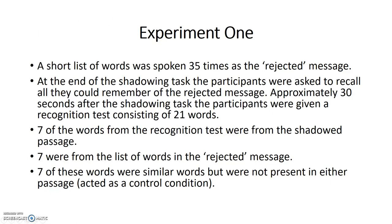In experiment one, a short list of words was spoken 35 times as the rejected message. At the end of the shadowing task, participants were asked to recall all they could remember of the rejected message. Approximately 30 seconds after the shadowing task, they were given a recognition test consisting of 21 words: seven from the shadowed passage, seven from the rejected message, and seven similar words not present in either passage, which acted as a control condition.